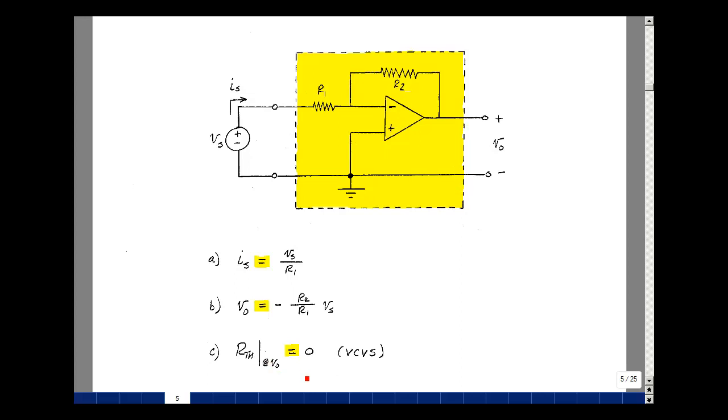I did a more formal derivation in ECE 201, but this is more of a seat of the pants or common sense argument that there is no Thevenin resistance here because we have a voltage-controlled voltage source. Put any load here you want, except the short circuit and you'll be able to have exactly the same expressions.